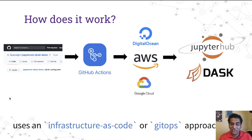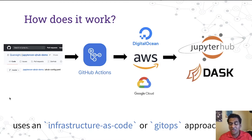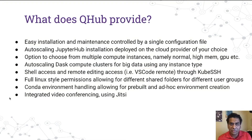The way we have built our system is that everything is based off a single config file. As we change that config file, it uses GitHub Actions to auto-redeploy the platform onto DigitalOcean, AWS, or Google Cloud — whichever one you prefer.